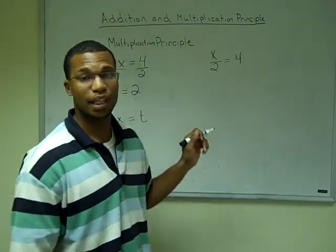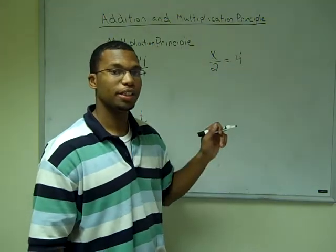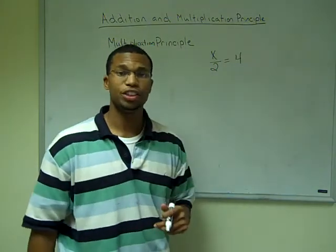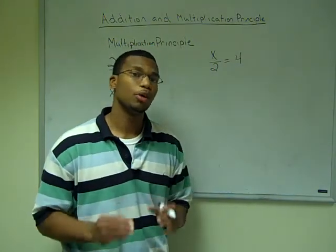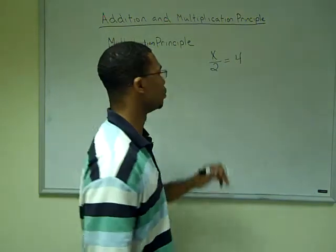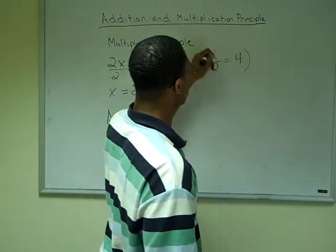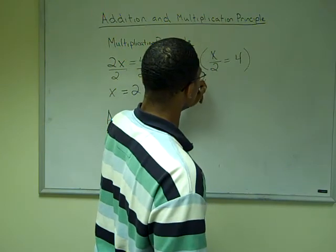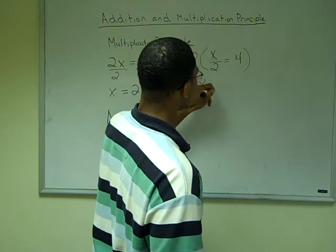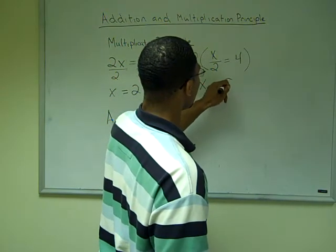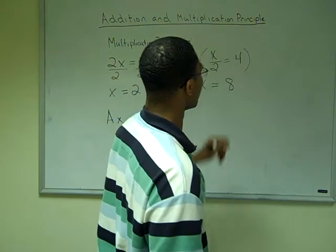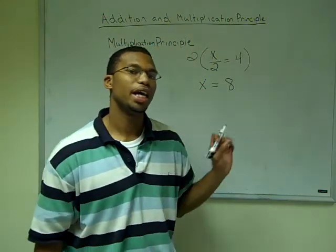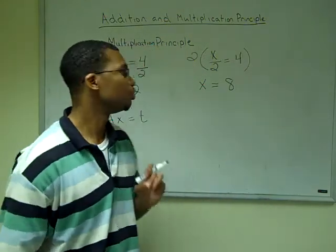For our second example, 2 is being divided by x. So to undo the division, we're going to multiply both sides by 2. By multiplying both sides by 2, we get x = 8.